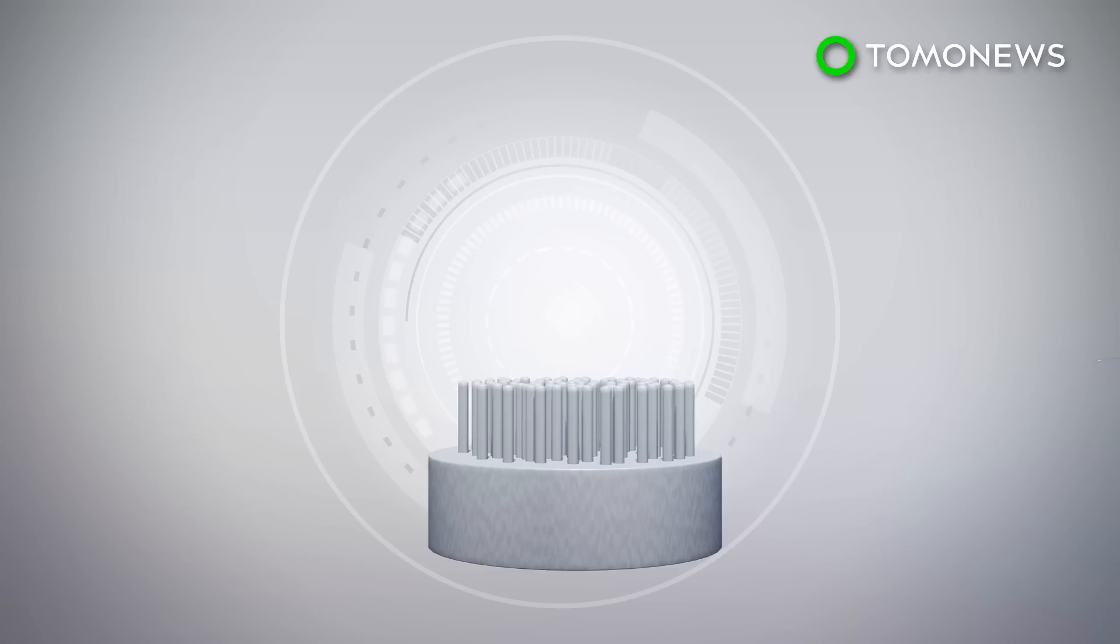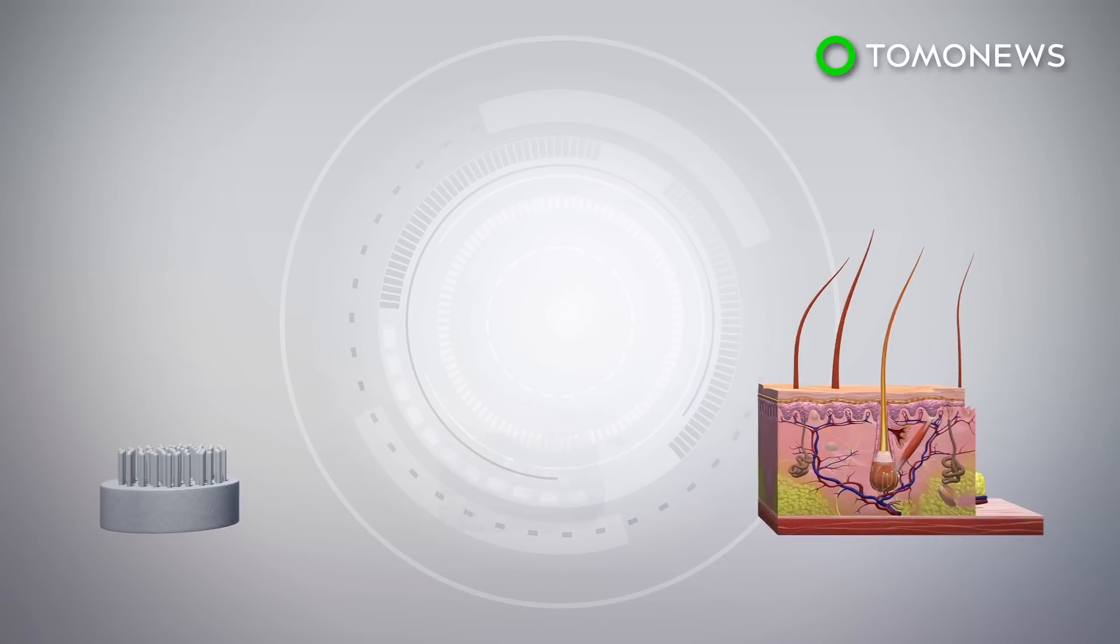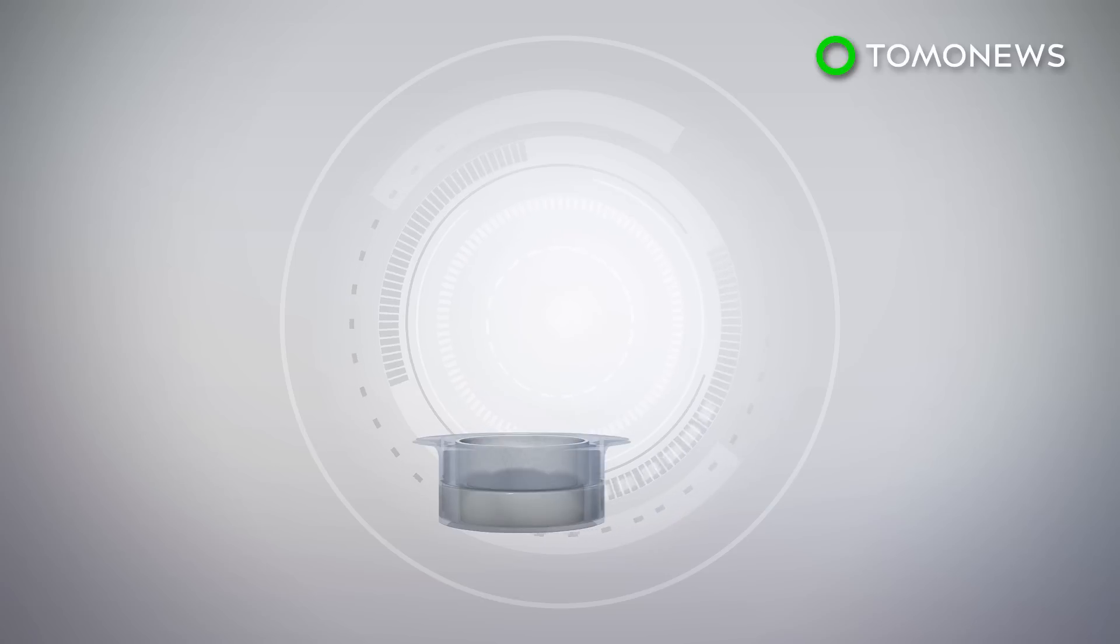researchers used 3D printing to create a plastic mold with long, thin extensions half a millimeter wide and designed to mimic the natural microenvironment of human hair cells.